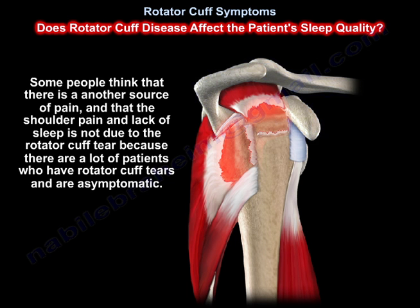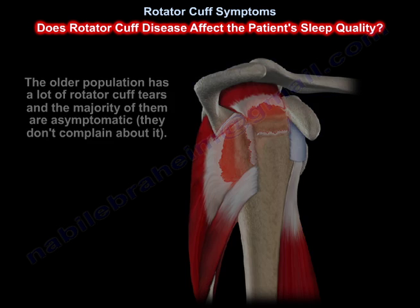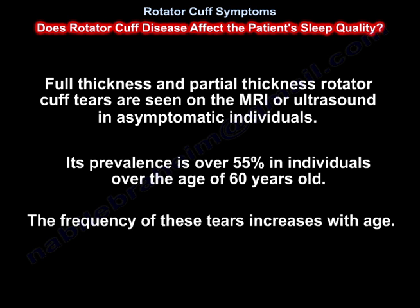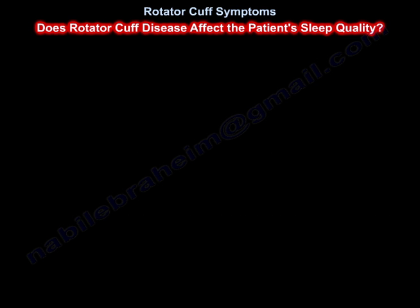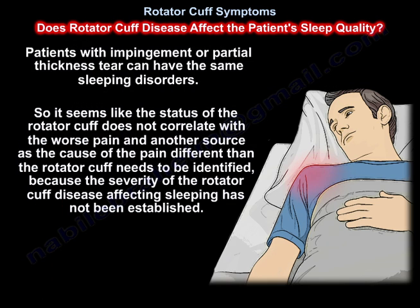Many patients have rotator cuff tears and are asymptomatic. The older population has a lot of rotator cuff tears and the majority are asymptomatic. Full thickness and partial thickness rotator cuff tears are seen on MRI or ultrasound in asymptomatic individuals, with prevalence over 55% in individuals over the age of 60 years old. The frequency of these tears increases with age. Another source of pain, different from the rotator cuff, needs to be identified, because the severity of rotator cuff disease affecting sleep has not been established.